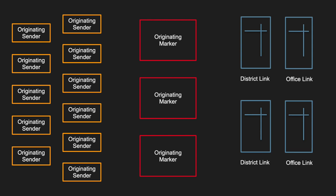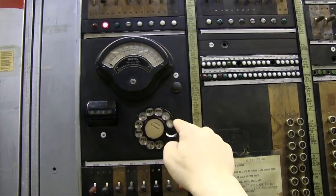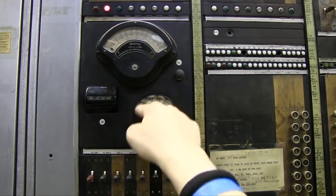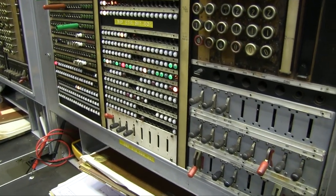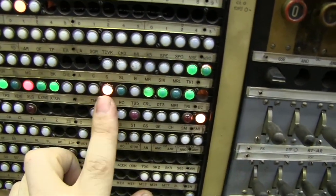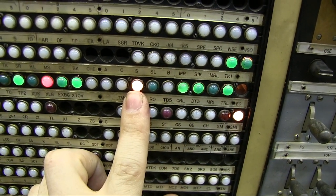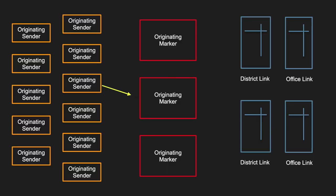But there's one more thing that markers do that we really haven't talked about yet. Markers are full of checking circuits, and during each operation they do all sorts of tests on themselves and on the routes they're about to set up. If any tests indicate a problem, the marker will attempt to go around the problem by doing what's called a route advance.